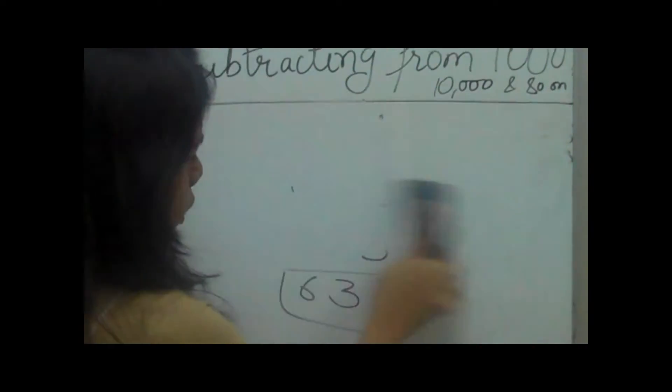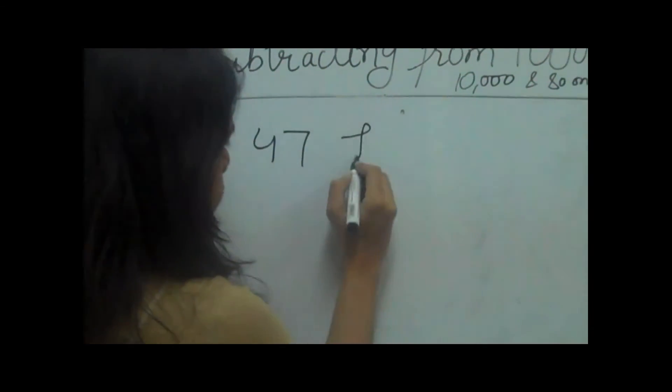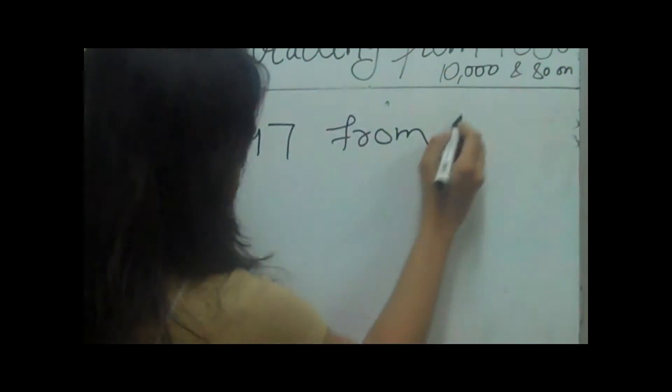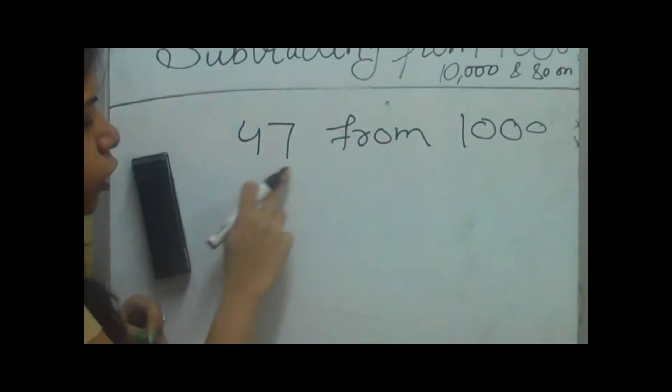Now suppose we have a 2 digit number. Let's say we have 47 and we need to subtract it from 1000. Now here we have 3 zeros but only a 2 digit number.